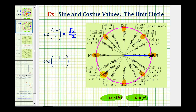So this is the terminal side of our angle. Notice it is also coterminal with five pi over four radians. We had one complete clockwise rotation and then rotated to here. The terminal side intersects the unit circle at a point where both the x-coordinate and y-coordinate are negative square root two divided by two. Because we want the cosine function value, we take the x-coordinate: negative square root two divided by two.